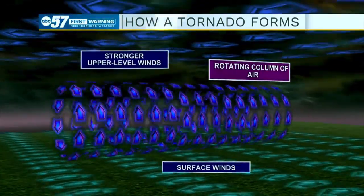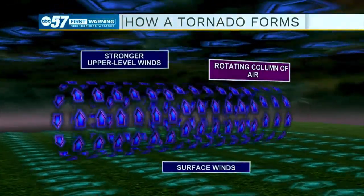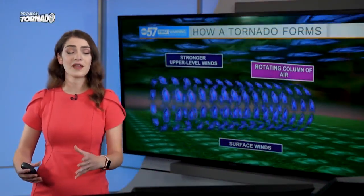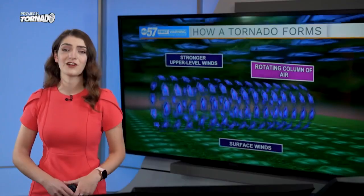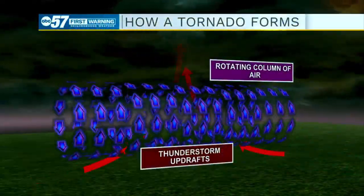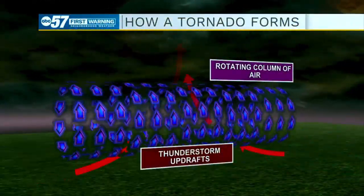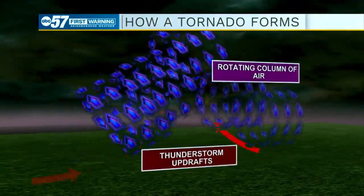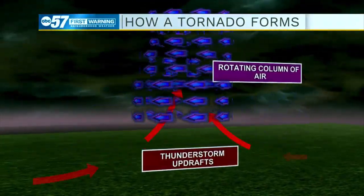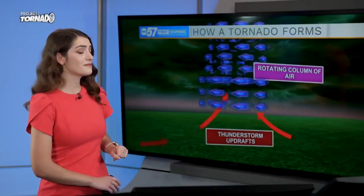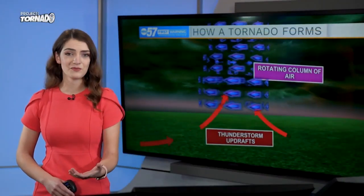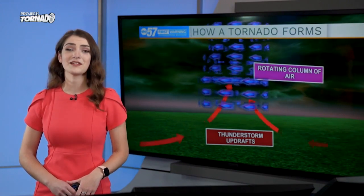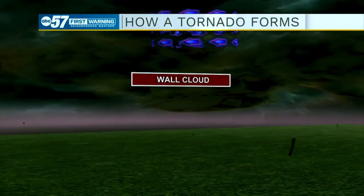This rotating column would be horizontal to the Earth's surface as it starts to spin around. Once we get a thunderstorm coming into the area, we can see that warm air start to rise up in the atmosphere with thunderstorm updrafts. Those updrafts start to take part of that rotating column of air, lifting it and eventually rotating the column to become vertical. From this we start to see the development of cumulonimbus clouds — those big dark clouds you see during thunderstorms — and from that, we might start to look out for a rotating wall cloud.